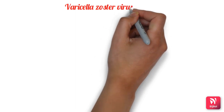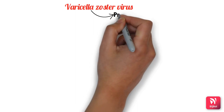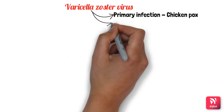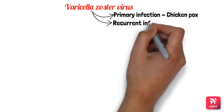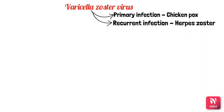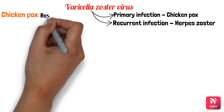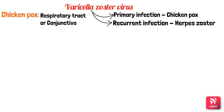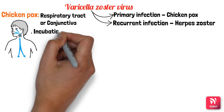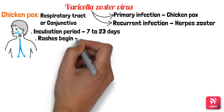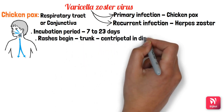The next herpes virus is varicella-zoster virus (VZV). The primary infection results in chickenpox (varicella) and the recurrent infection is termed herpes zoster — this is why the virus is named varicella-zoster virus. The main portal of entry for chickenpox is through the respiratory tract or conjunctiva. The incubation period is about 7 to 23 days, after which rashes appear mainly on the trunk in a centripetal distribution, sparing the distal parts of the limbs.